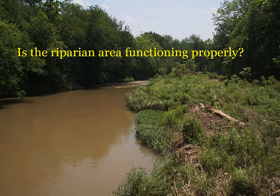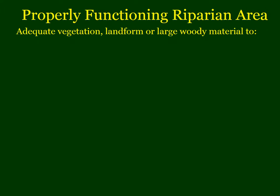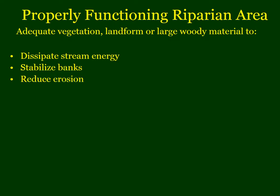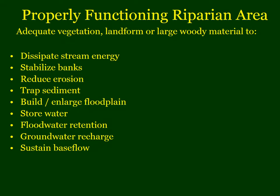You're asking this simple question: is this riparian area functioning properly? A properly functioning riparian area is one that has adequate vegetation, landscape formation, or large woody material to dissipate energy, stabilize banks, reduce erosion, trap sediment which builds the floodplain and stores water, provide a place for floodwater retention, and provide for groundwater recharge and maintenance of base flow.